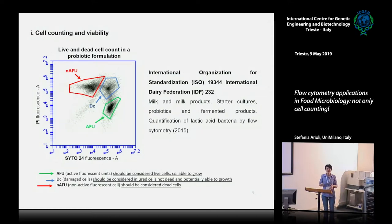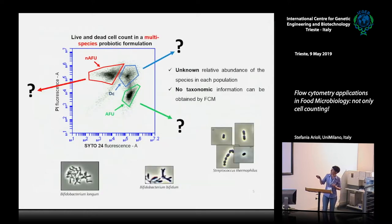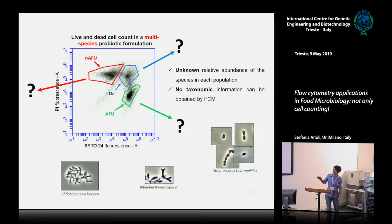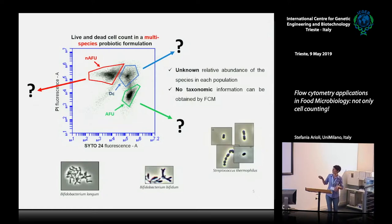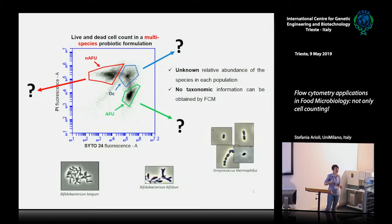This is fine if we are analyzing a probiotic containing only one species. But in our case, we have a multi-species probiotic formulation — in this formulation, we have seven different bacterial species, including Streptococcus thermophilus, Bifidobacterium bifidum, Bifidobacterium longum, Lactobacillus paracasei, and so on. At the end of this analysis, we cannot assign each dot to a specific species.